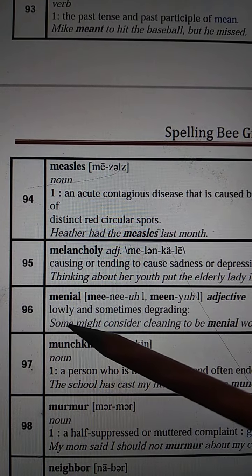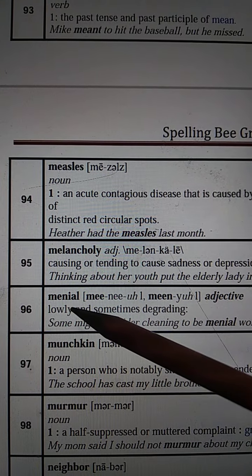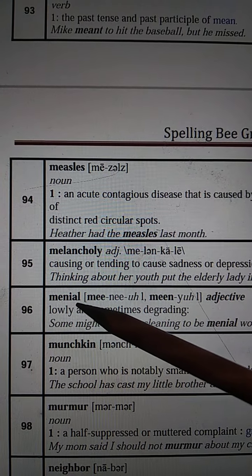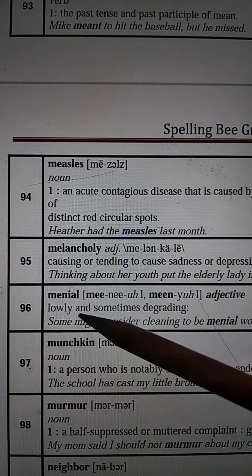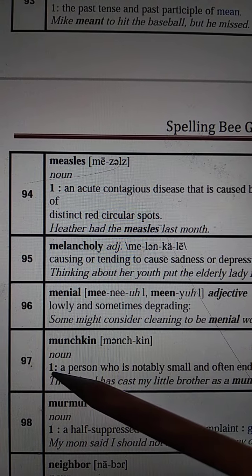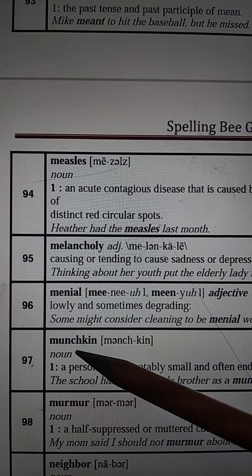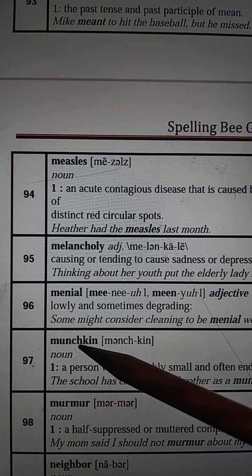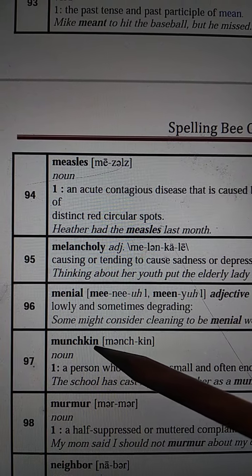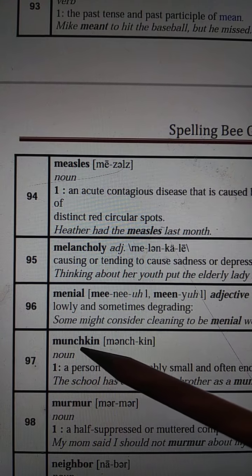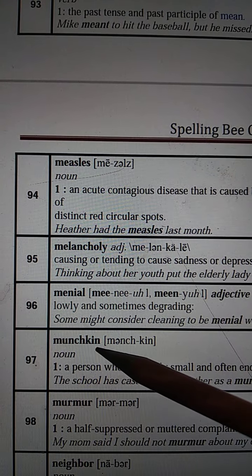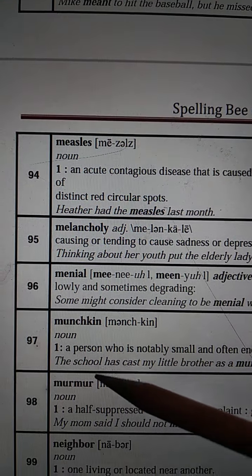Number 96: Menial. M-E-N-I-A-L. Menial. Number 97: Munchkin. M-U-N-C-H-K-I-N. Munchkin. M-U-N-C-H-K-I-N. Munchkin.